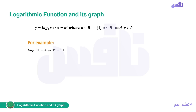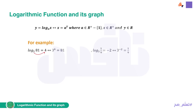For example, we want to convert between exponential and logarithmic forms. If we have log base 3 of 81 equals 4, we convert it to exponential form: 3 to the power of 4 equals 81. Similarly, log base 3 of (1/9) equals negative 2, so the base of the log becomes the base of the power: 3 to the power of negative 2 equals 1/9.